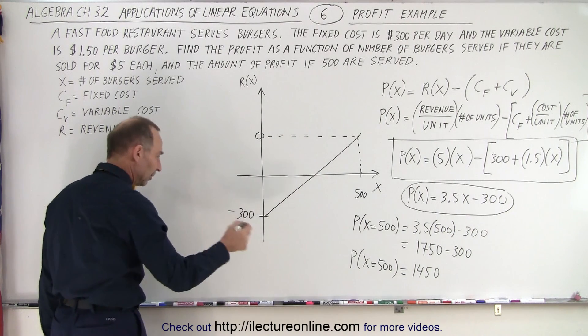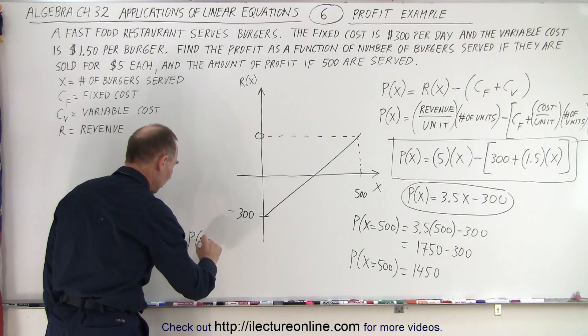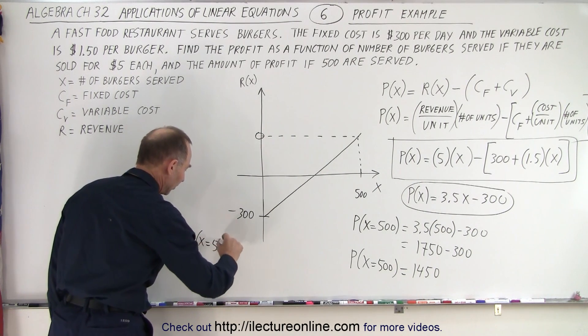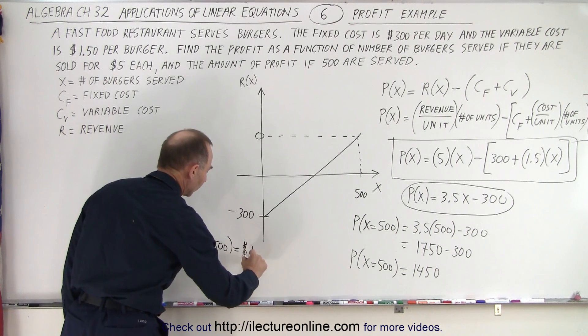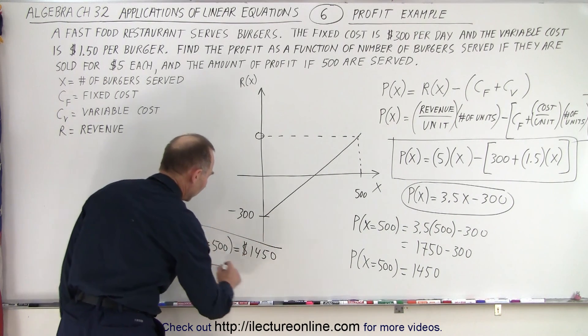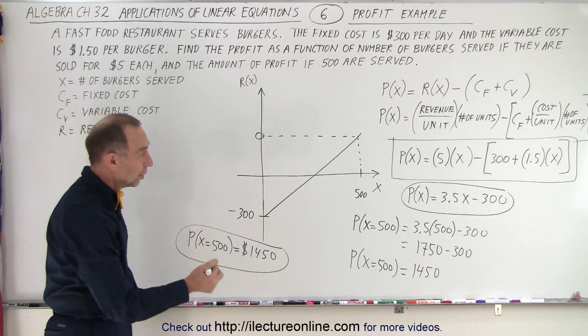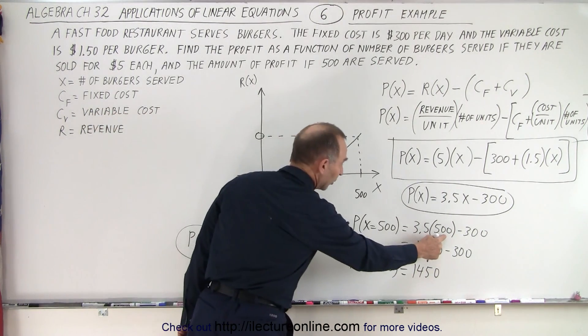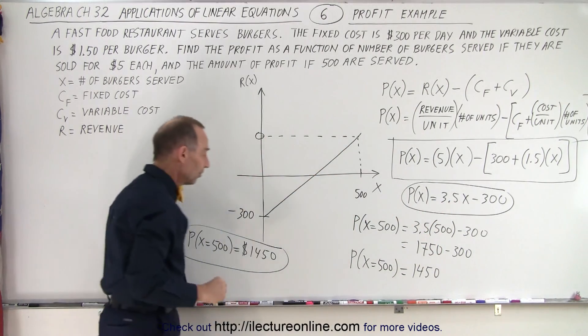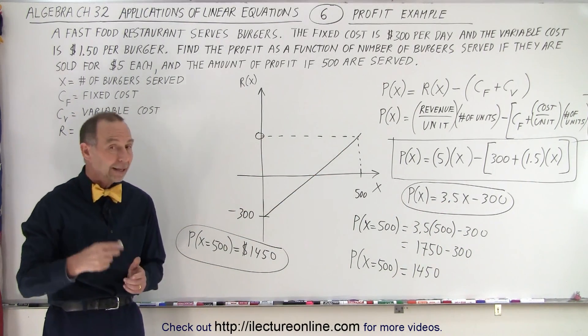So that would be the profit when x is equal to 500. And notice, then if we convert to dollars, the profit when x equals 500 burgers is equal to $1,450. So that's how we figure out the profit for any number of burgers. Again, all we need to do is plug in the right number of burgers in there, and that gives us the profit that we need. And that is how it's done.